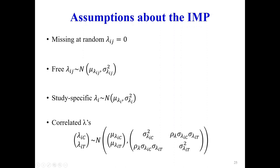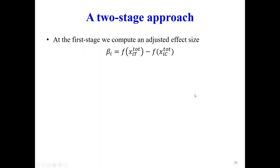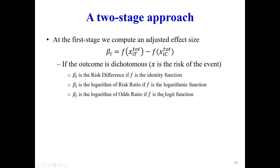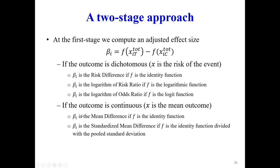Of course, a correlated lambda introduces an extra parameter — the correlation between the two lambdas — which would be more difficult to elicit from experts. Generally, this is a two-stage approach. At the first stage, we compute an adjusted effect size by adjusting the outcomes in the treatment and control groups. For dichotomous outcomes, X is the risk of an event, and using different identity functions we can estimate all known effect sizes.